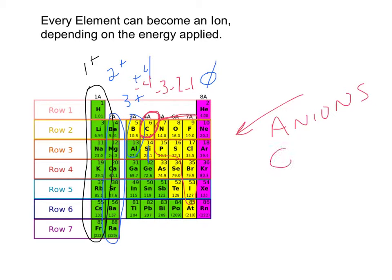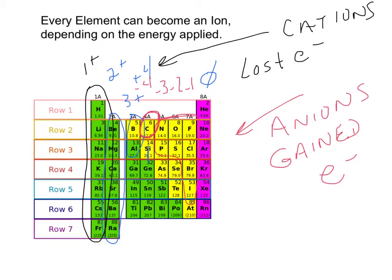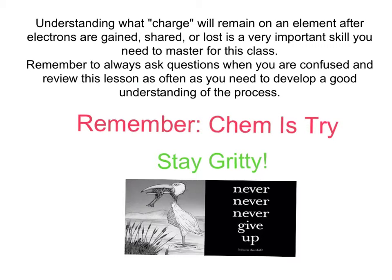An anion is something that has gained electrons. It now has more electrons than protons. And all of these over here are going to form cations. Cations have now lost an electron and it now has more protons than it does electrons. I would strongly suggest that you really have to understand what we mean by charge, it's also something we talk about as its oxidation number. You need to go back over this as many times as possible until you can get this down. Remember, whenever you have questions, come in and ask so we can make sure we can keep your confusion to a minimum. Chemistry is hard, but as always, chem is try. Stay gritty out there and never ever give up.